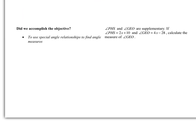Today we talked about using special angle relationships to find angle measures — supplementary angles, complementary angles, linear pairs, and adjacent angles. Here is the problem for tomorrow: angles PHS and GEO are supplementary. If PHS is 2X plus 10 and GEO is 4X minus 28, calculate the measure of GEO. Remember supplementary means they sum to 180. Start by finding X, then use that to find the measure of angle GEO.